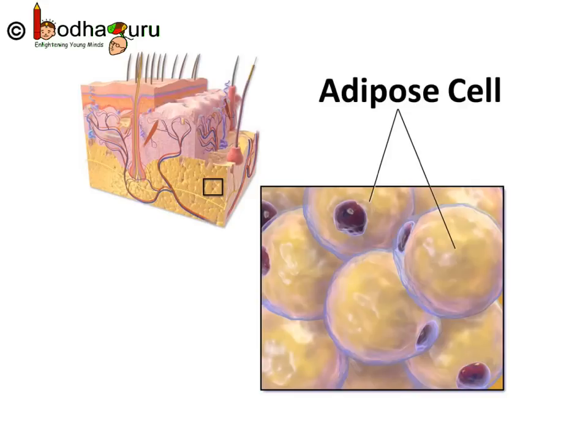People don't like to be fat, but adipose tissue, which stores fat, is a connective tissue too. It is found below the skin and between internal organs, providing insulation and cushioning from external blows. The cells of adipose tissue are filled with fat globules, and because of fat storage, adipose tissue acts as an insulator.